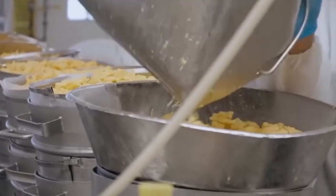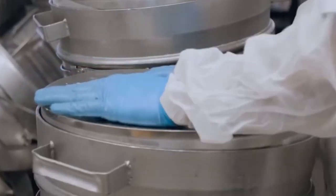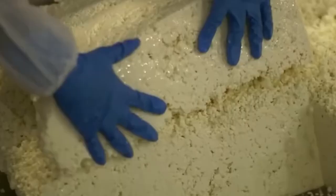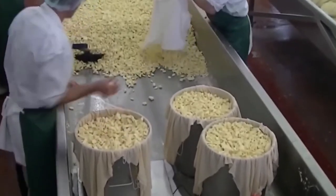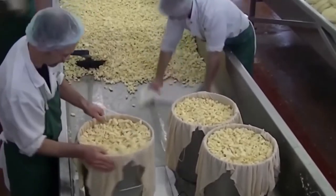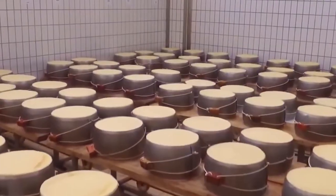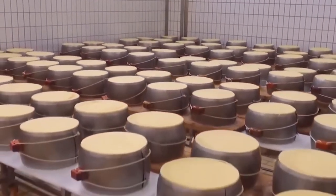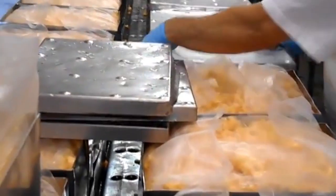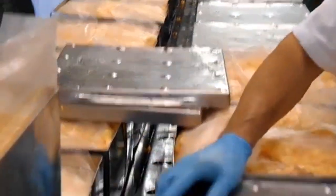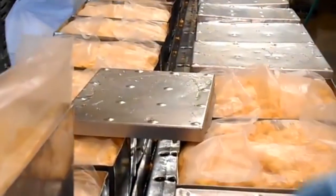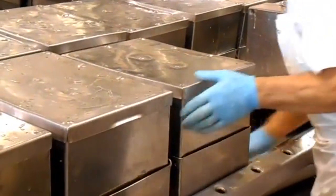Pressing the curds. Now the curds are put into molds that shape the cheese into blocks, wheels, or other forms. To help the curds stick together, they are pressed. Pressing squeezes out any leftover whey and makes the cheese firm. The amount of pressure and the time spent pressing depend on the type of cheese being made. Some cheeses are pressed gently while others need stronger pressure and longer time. This step also helps form the cheese's outer surface, which is important for the aging process later on.